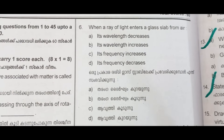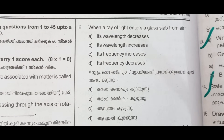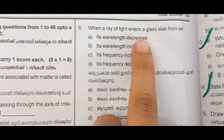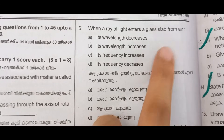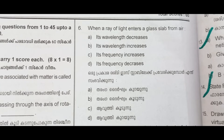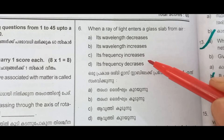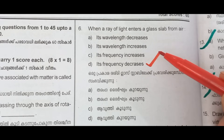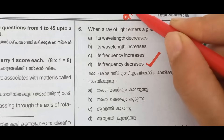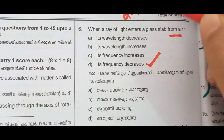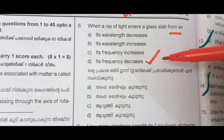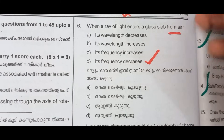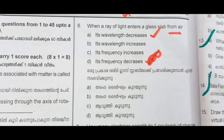When a ray of light enters from a glass slab into air, the wavelength decreases going from air into glass.